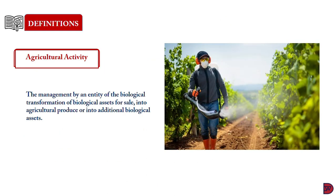Let's look at what agricultural activity is. This is the management by an entity of the biological transformation of biological assets for sale, transformation into agricultural produce, or into additional biological assets. Agricultural activity is distinguished by the fact that management facilitates and manages biological transformation and is capable of measuring the change in the quality and quantity of biological assets. This excludes managing animal-related recreational activities such as game parks and zoos, as there is no management of the transformation of biological assets but simply control of the number of animals, as well as the breeding of animals in zoos and game parks. Ocean fishing is also not an agricultural activity because it is the harvesting of biological assets from unmanaged sources.